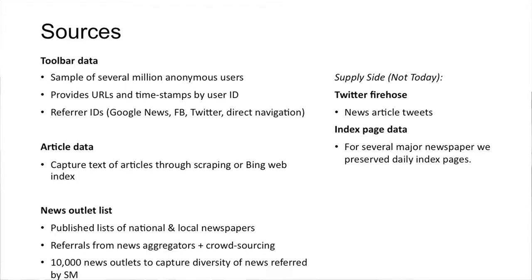For the data: we have several million anonymous users and something like 40 million page views. We get URLs and timestamps by user ID, and we have referrer IDs, which also have to be somewhat inferred probabilistically — you don't know for sure exactly that they came from Facebook, but we look at the timing and infer referrals. For the article data, we merge our URL data with the Bing algo index to pull down all the text of all the articles people are reading.